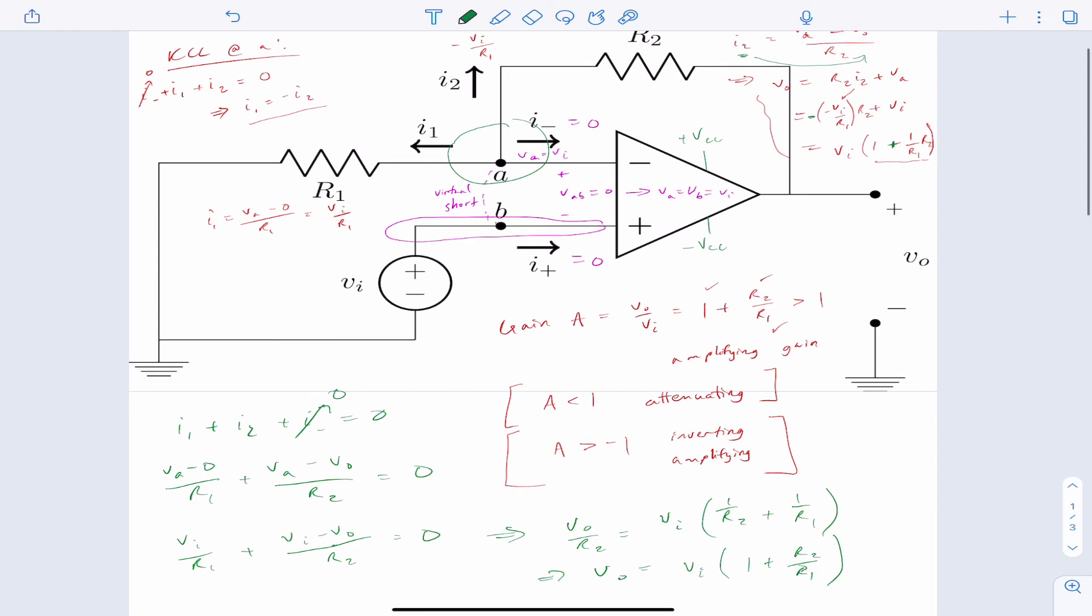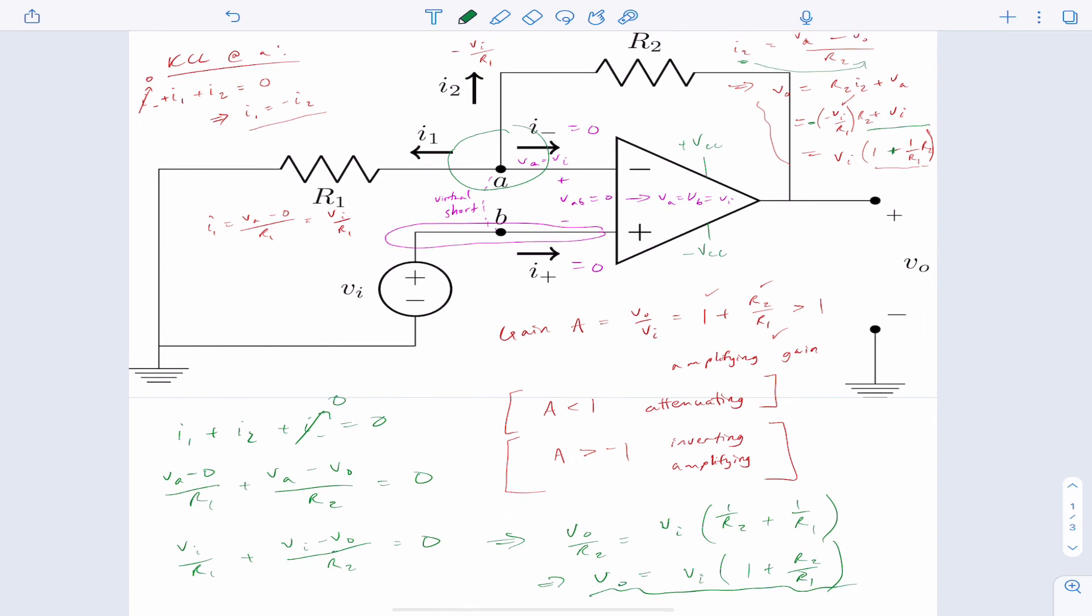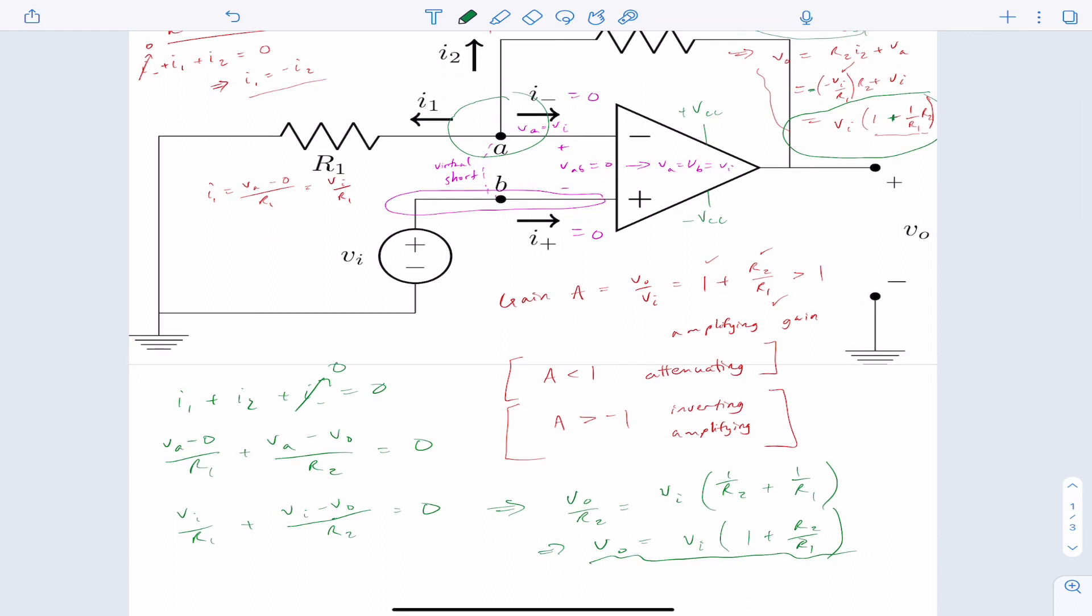And so you see, I have the same equation for VO down here as we did above. So it's good to see that with two approaches, we have the same answer. And then you could divide both sides by VI to get the gain. So with two approaches and one result, we should be confident that we can analyze this circuit.